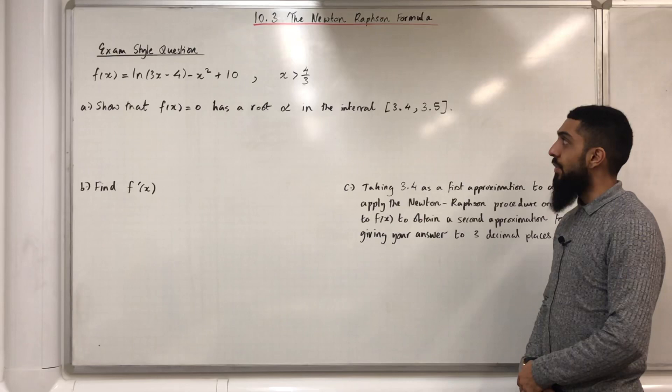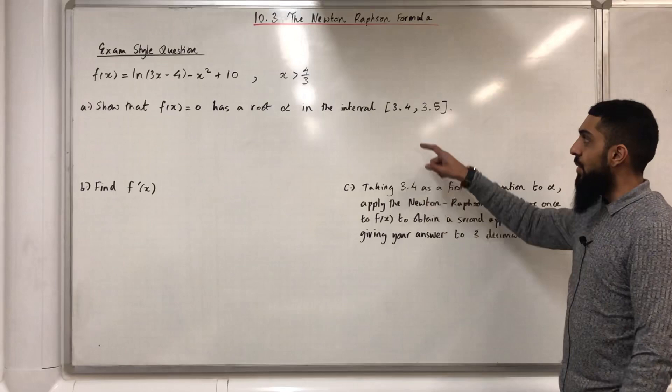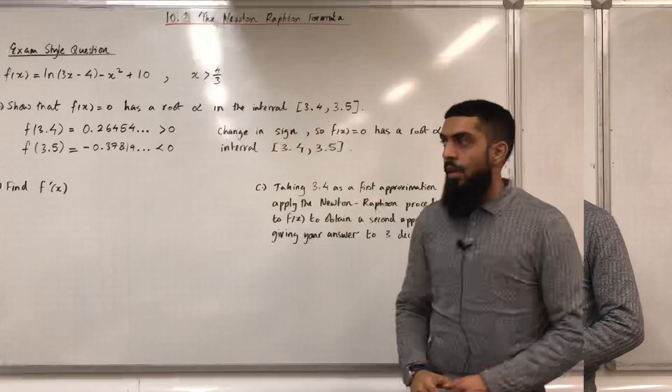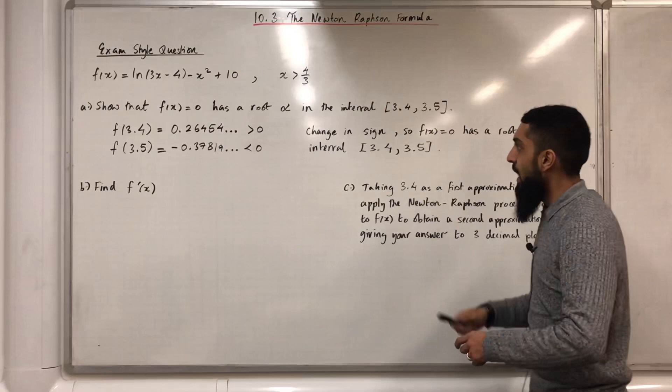For part A, what we need to do is substitute 3.4 into the function f(x), then substitute 3.5 into the function f(x), show that there is a change in sign, and then write a conclusion. So, f(3.4) is greater than 0, f(3.5) is less than 0. Change in sign, so f(x) equals 0 has a root alpha in the interval [3.4, 3.5].